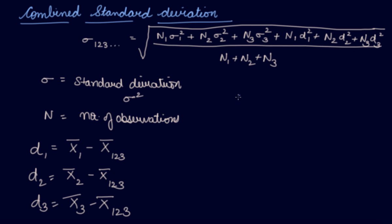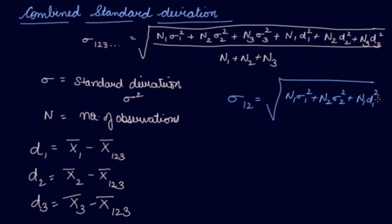Now if you are given only 2 series, the formula is: n1 into standard deviation of series 1 squared, plus n2 into standard deviation of series 2 squared, plus n1 into d1 squared, plus n2 into d2 squared, all divided by n1 plus n2. You simply add on as many series as there are.